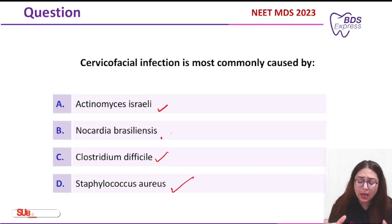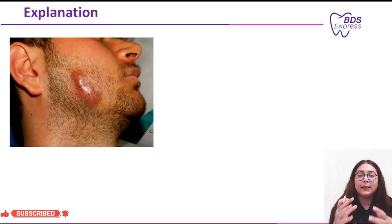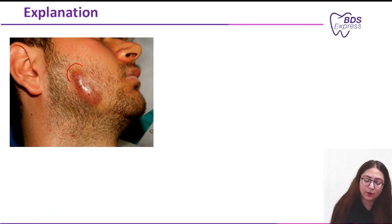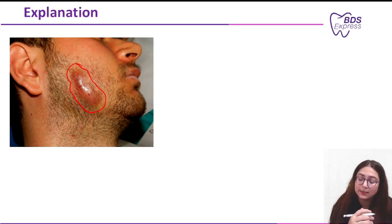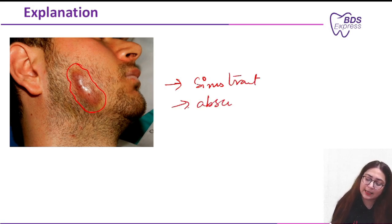The correct answer is Actinomyces israelii. Cervicofacial actinomycosis is caused by Actinomyces israelii. The classic features include formation of sinus tracts, abscess, and one very classic feature: sulfur granules.